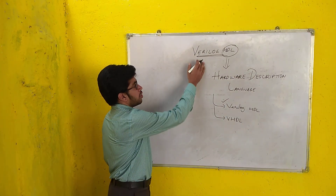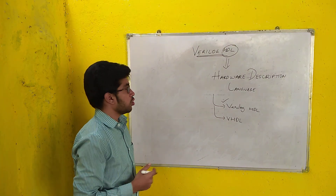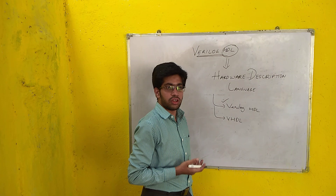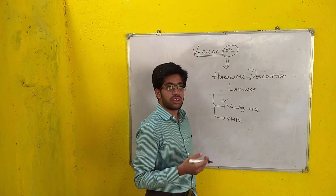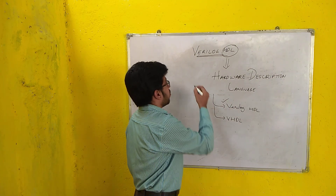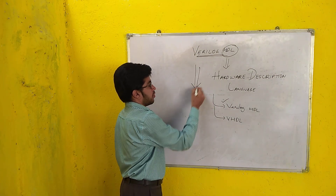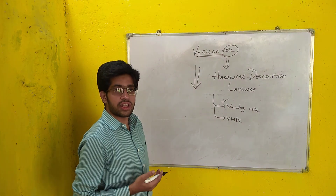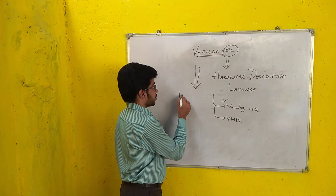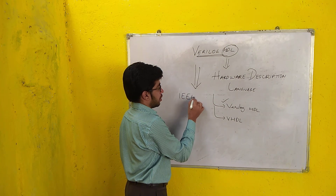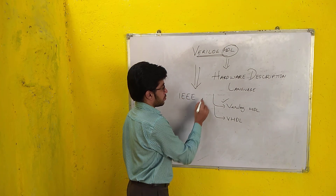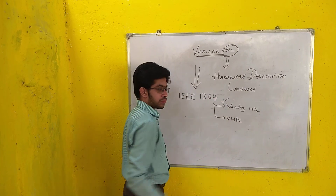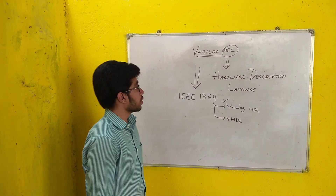Verilog HDL is a hardware description language used to design digital circuits. Verilog has been given a special privilege by IEEE — it is standardized by IEEE as IEEE 1364.